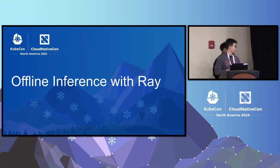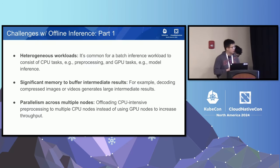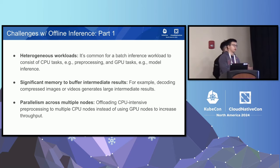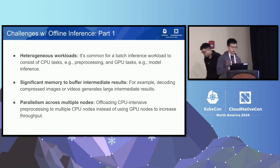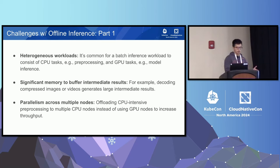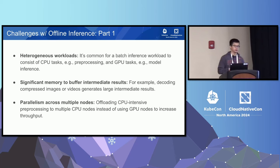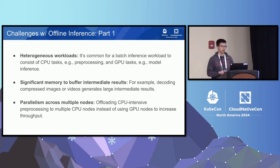Now let's talk about offline inference with Ray. The first challenge is that batch inference workloads commonly consist of both CPU and GPU tasks — CPU for I/O and preprocessing, GPU for model inference. Second, CPU tasks such as preprocessing often generate very large intermediate results. For example, image decoding may generate a 10x larger result compared to the input. Third, offline inference typically needs to support spreading work across multiple nodes — offloading CPU-intensive tasks to CPU nodes is a common pattern for heterogeneous computation that improves throughput and saves cost.